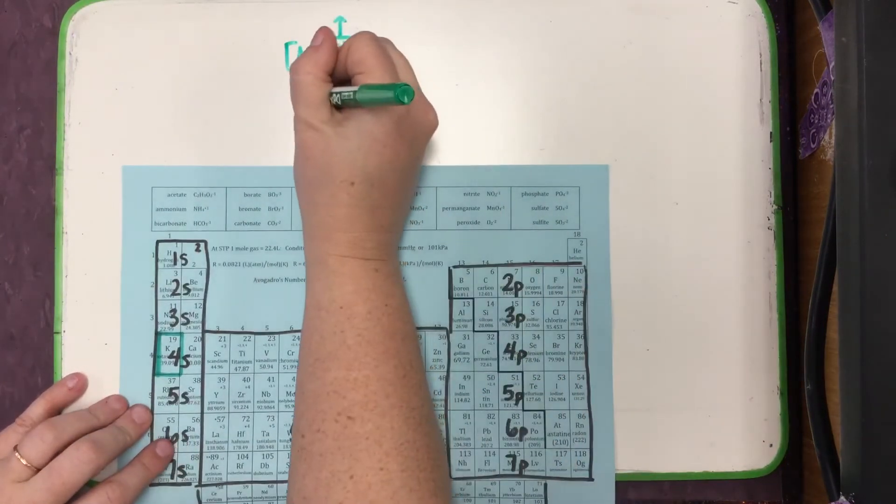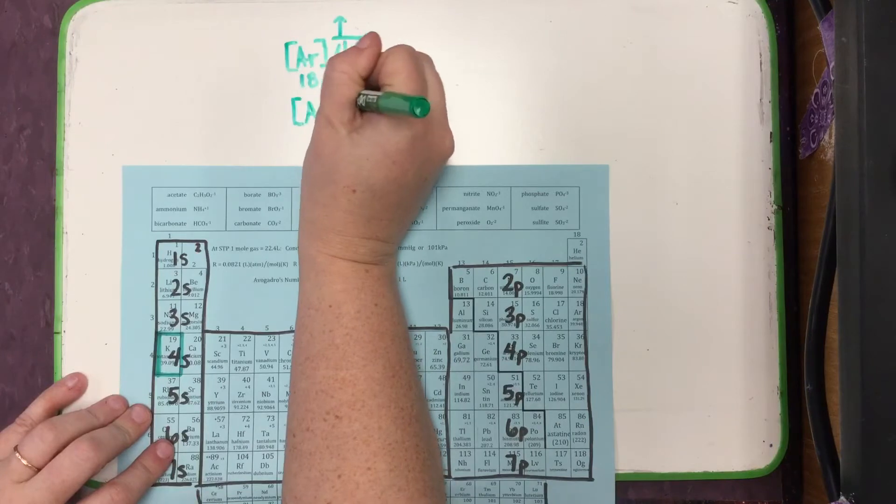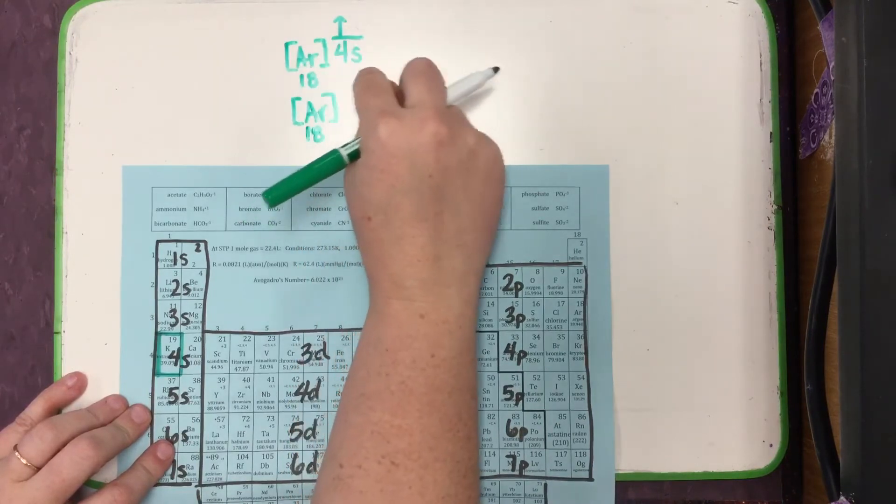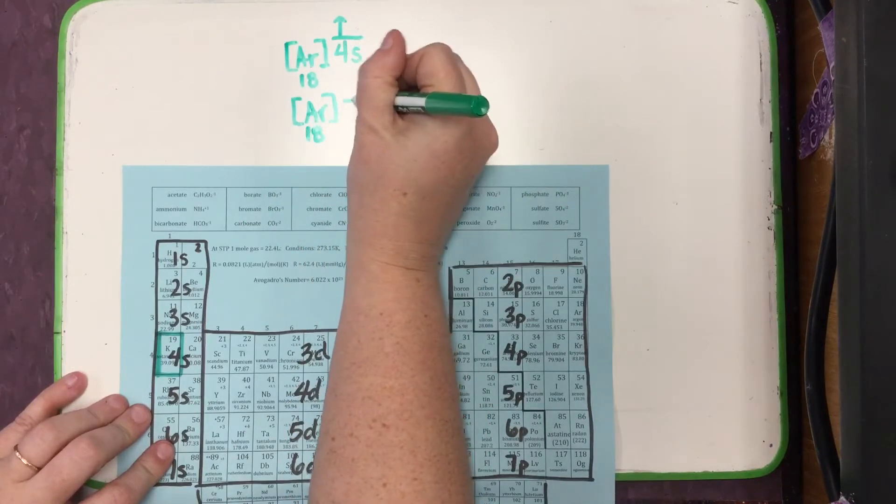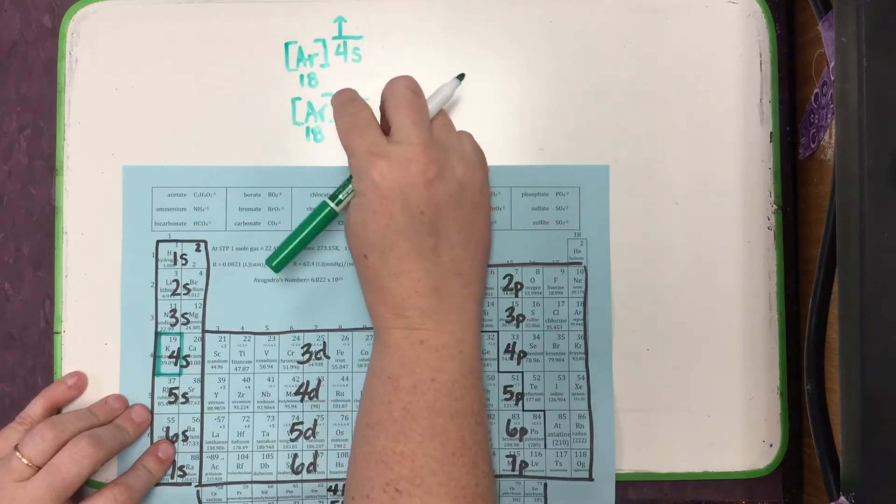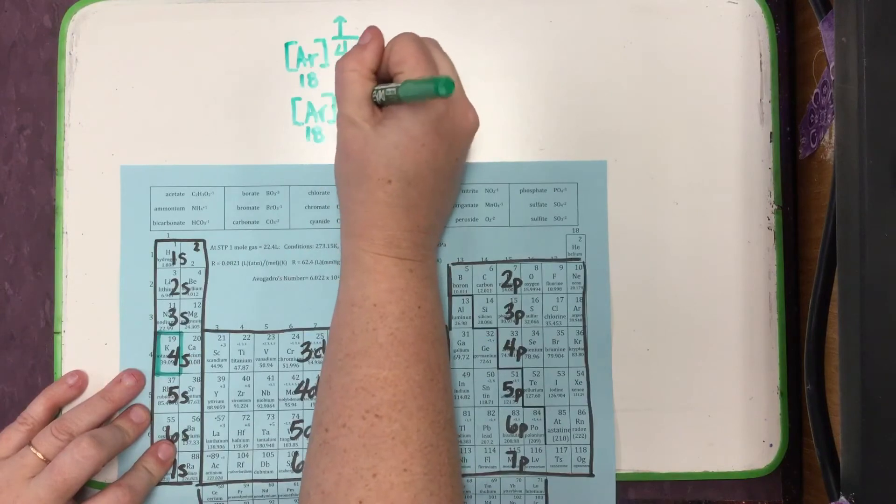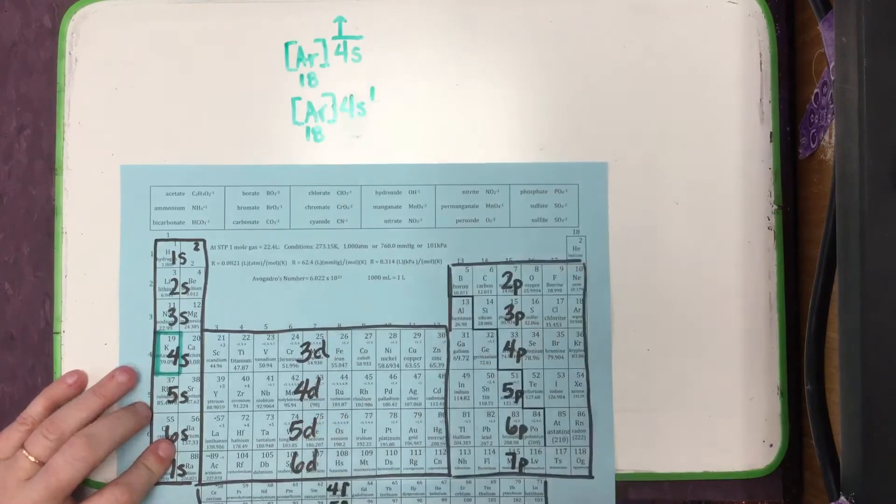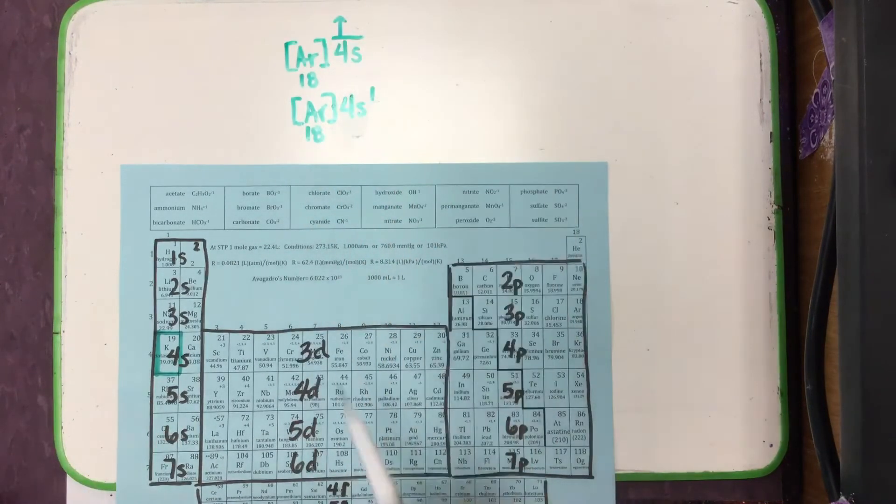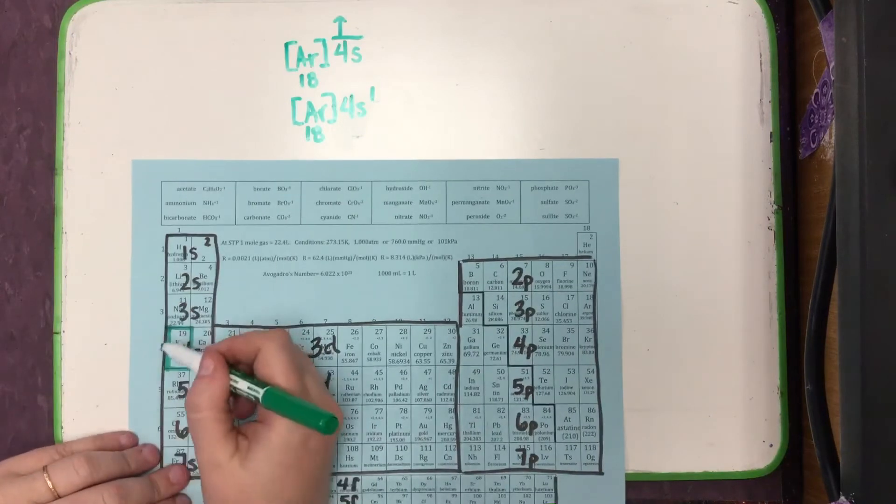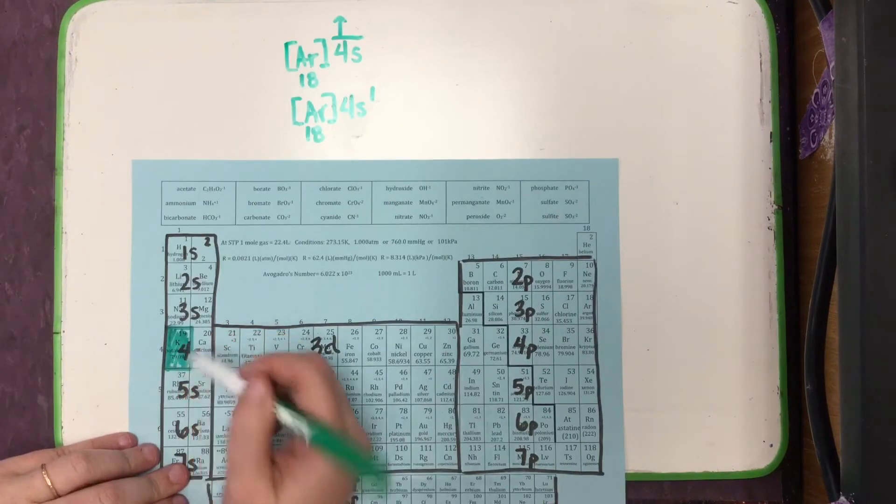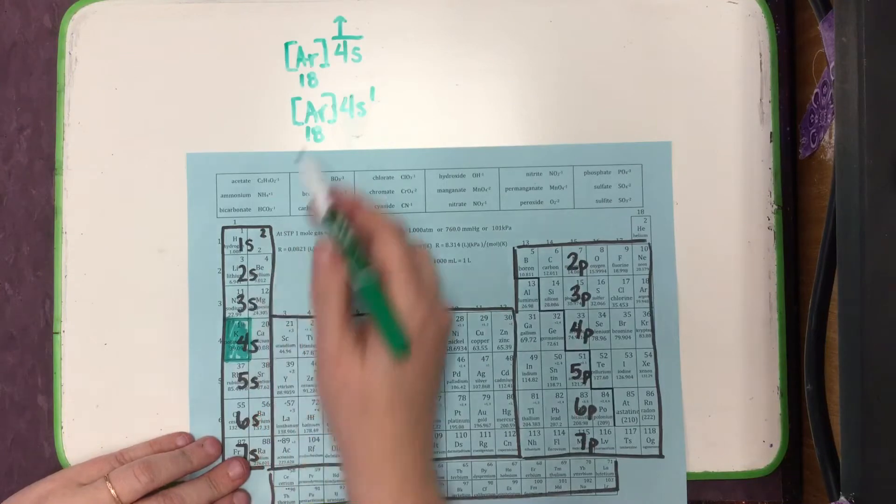I put argon in square brackets, write its atomic number underneath it, and then I just need to represent the next one, which would be 4S. So I can have my orbital notation, the shorthand version, which is 4S with 1 arrow. Or I could write out the electron configuration version, which is where I would take argon and add 4S with just an exponent of 1. Both of these are the shorthand versions of potassium, 19 total electrons.